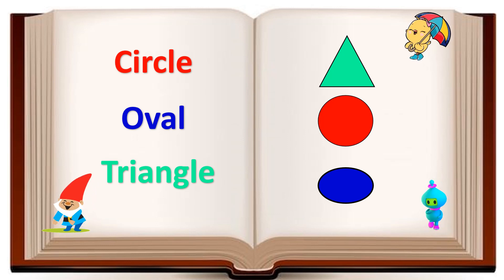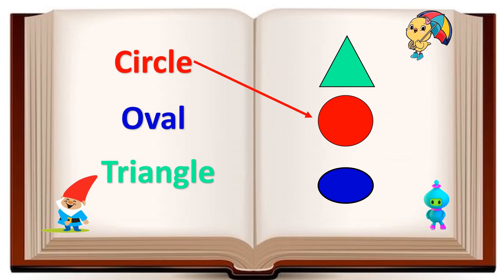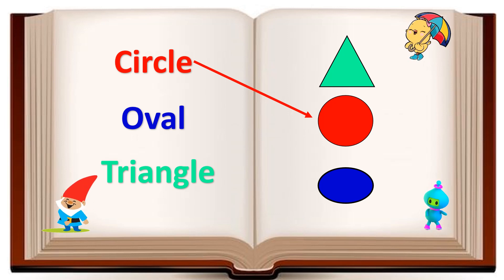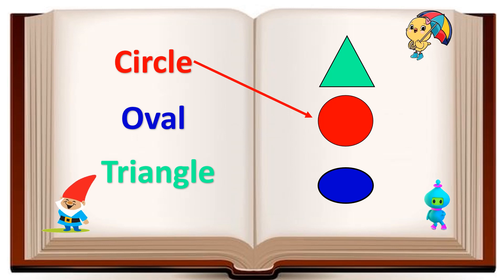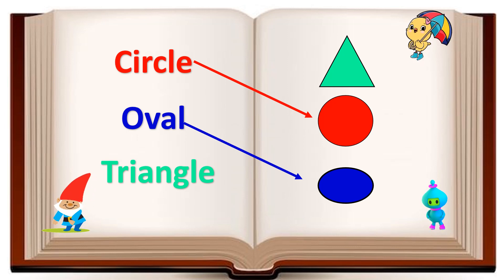Now let's match the spelling of circle with its correct picture. Yay, good job! Now we will match the spelling of oval with its correct picture. Well done.